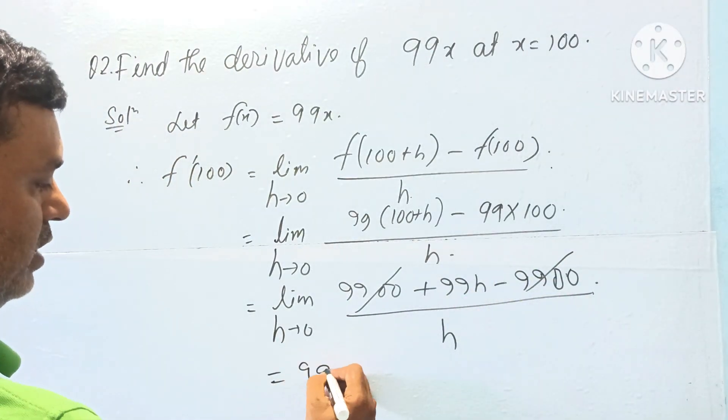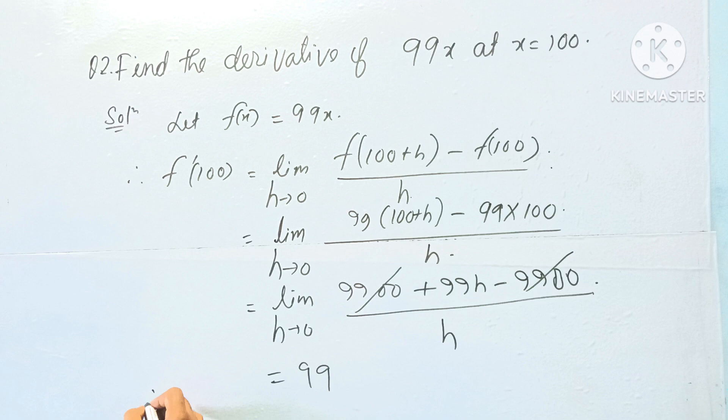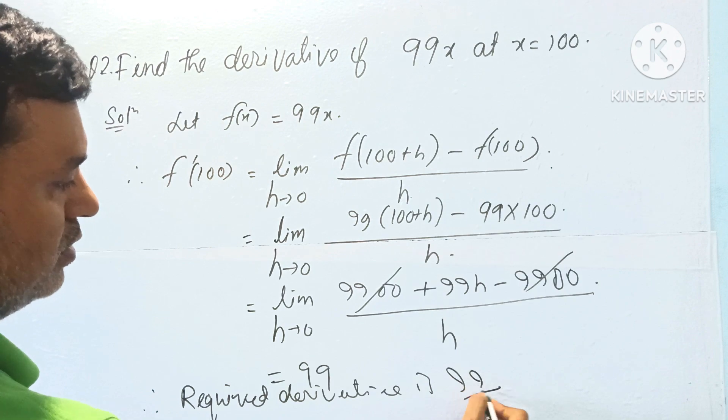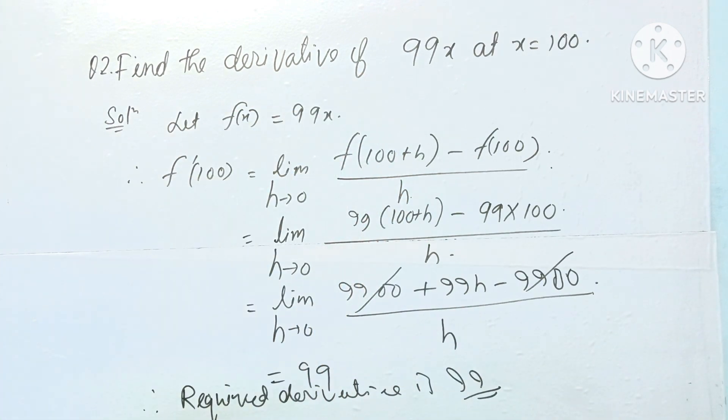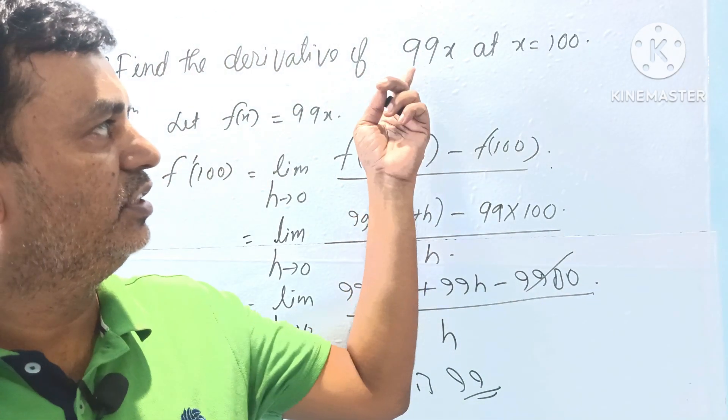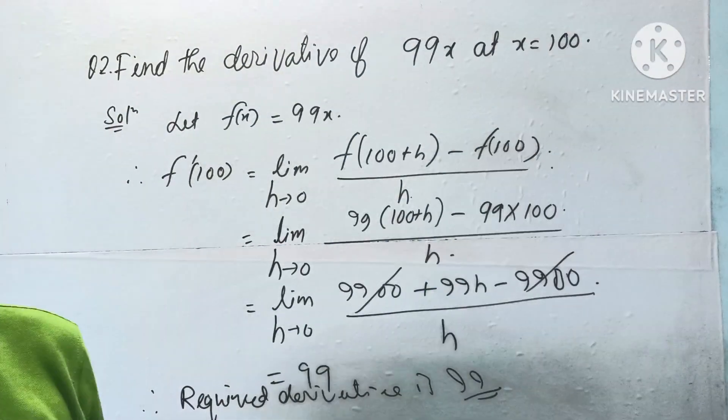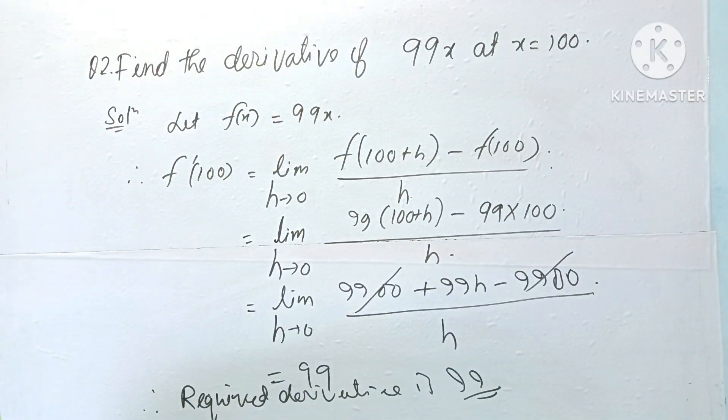Equal to 99. Therefore, the required derivative is 99. So for the function 99x at x equal to 100, the derivative is 99. Next question.